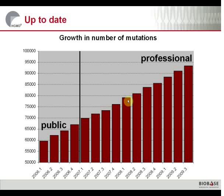As you can see, there are nearly 100,000 unique different mutations in the HGMD database, which cover over 3,500 genes and are extracted from nearly 30,000 literature articles. The black line here on the left-hand side shows where the data entries in the public version stop. All the data to the right of this black line is only available through the professional version.